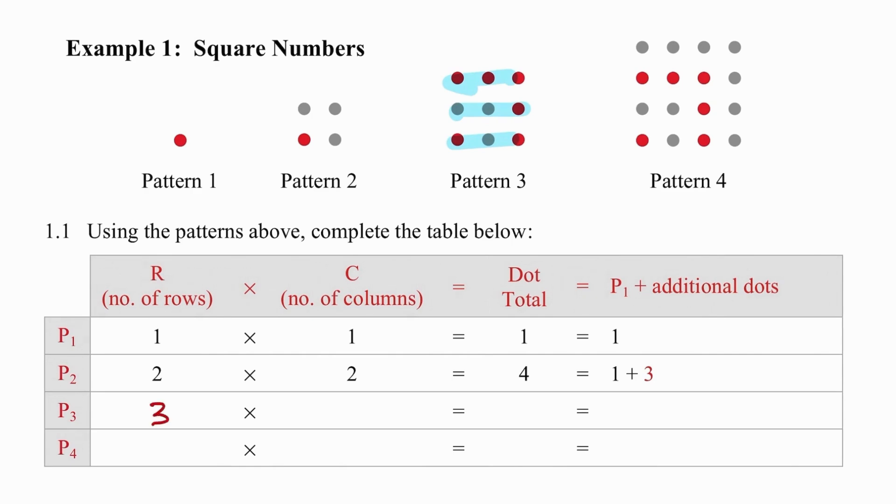Then go back and count your columns. We're going to find that we have one, two, three columns. We go back to the table, record that information, take the product which is nine.